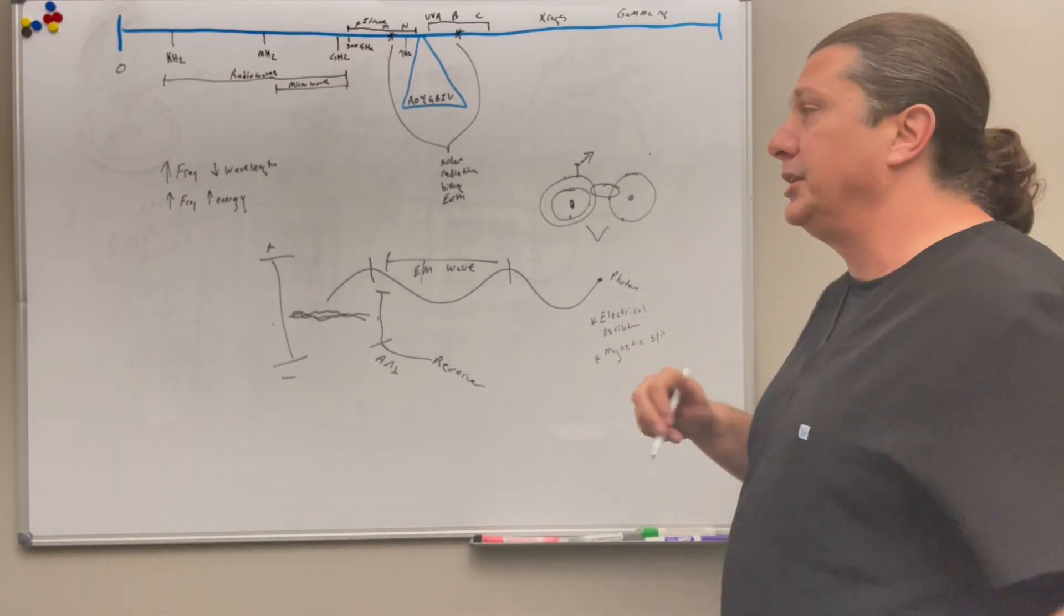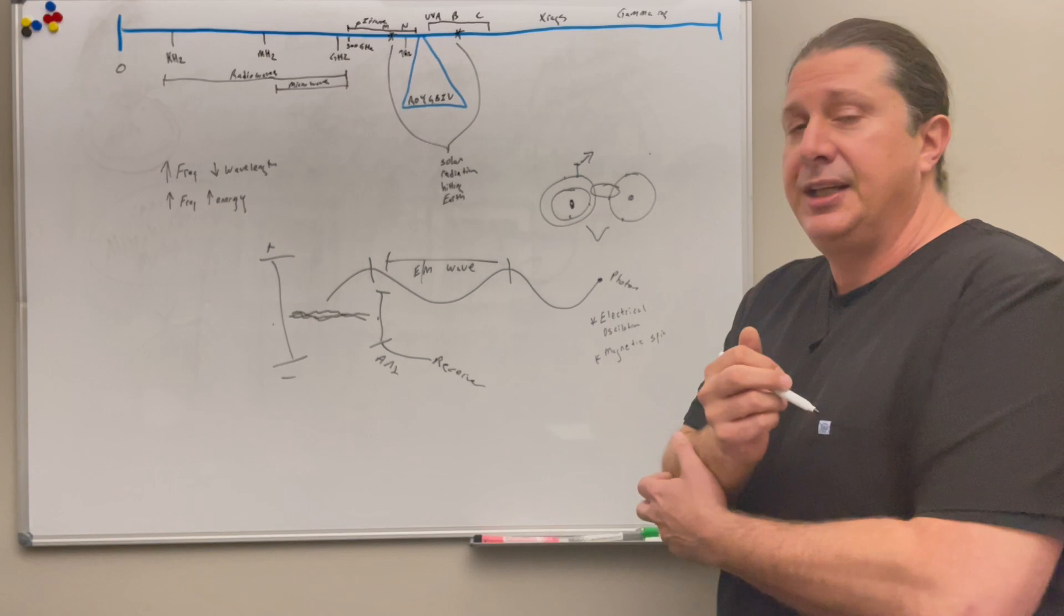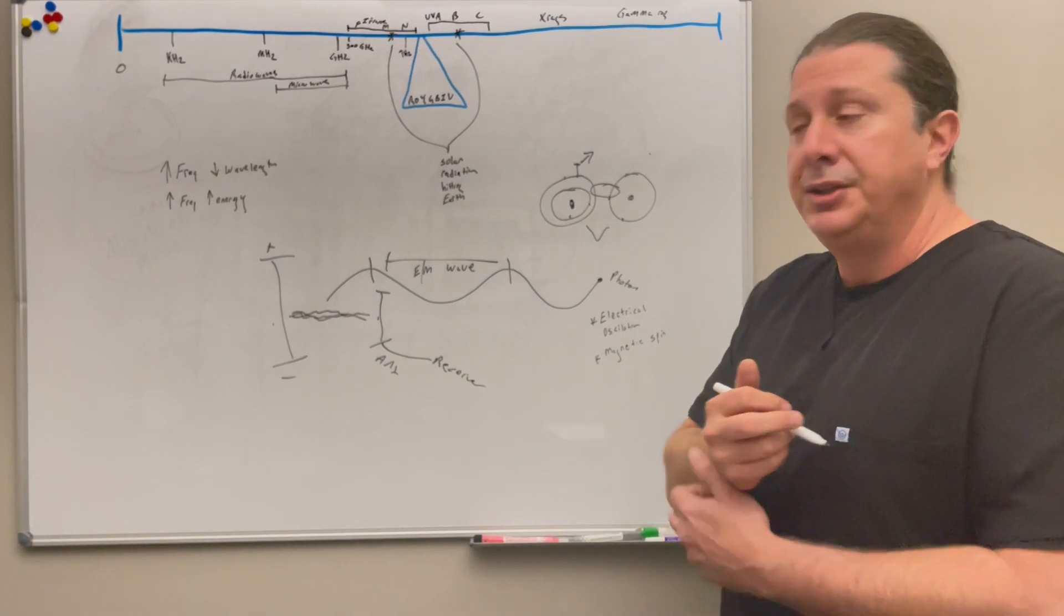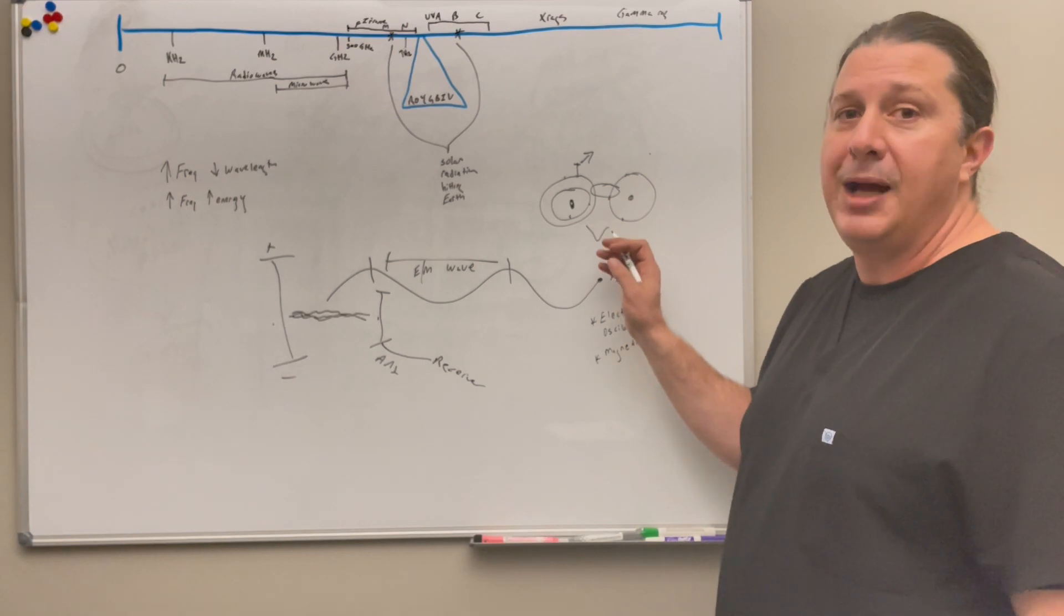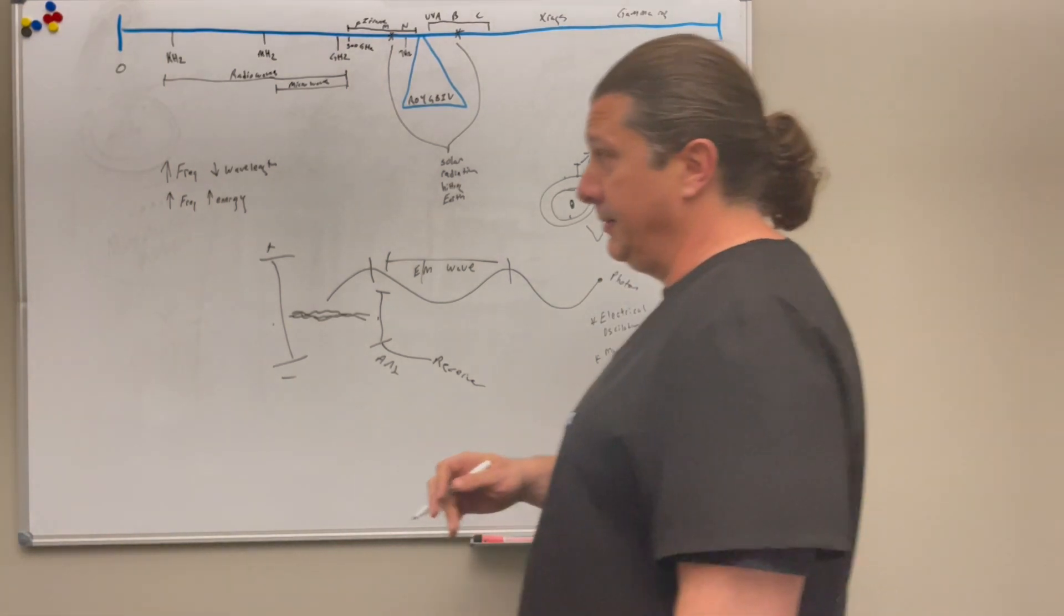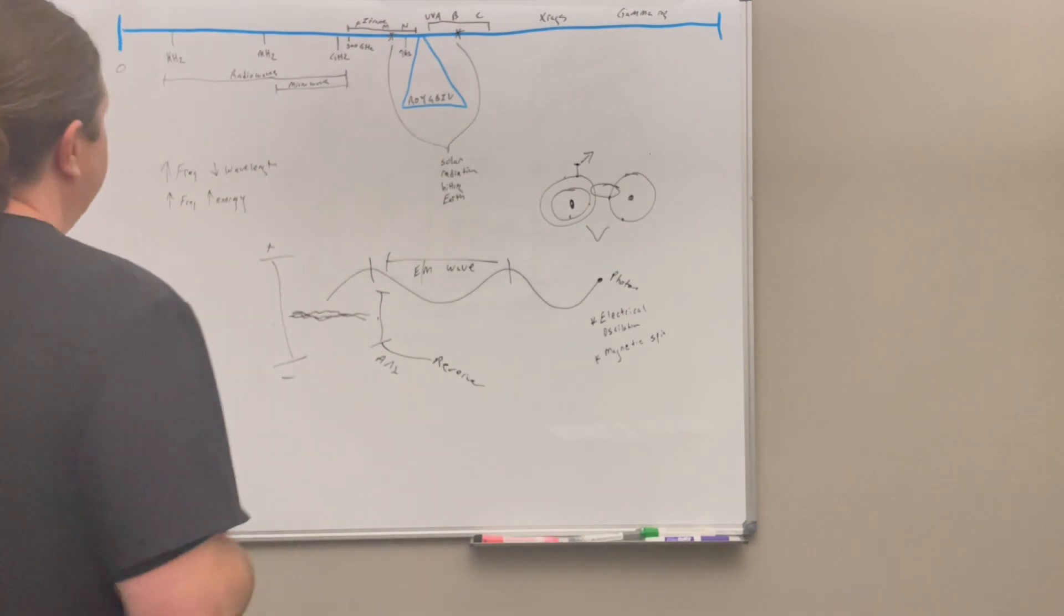This is important because as I spoke before about enzymes, enzymes are a catalyst of a reaction. By making this more likely to happen, it's going to happen more rapidly. So back to the basics of electromagnetic energy.